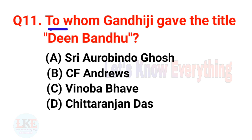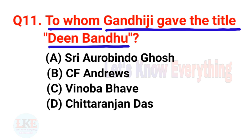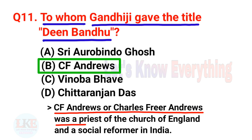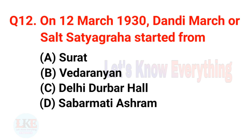Question number 11: To whom did Gandhiji give the title Din Bandhu? A. Sri Aurobindo Ghosh, B. C. F. Andrews, C. Vinoba Bhave, D. Chittaranjan Das. The right answer is option B, C. F. Andrews. Charles Freer Andrews was a priest of the Church of England and a social reformer in India. C. F. Andrews was a very close friend of Mahatma Gandhi and Rabindranath Tagore.